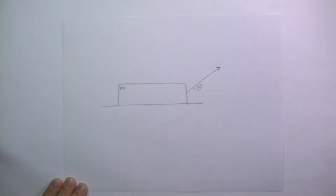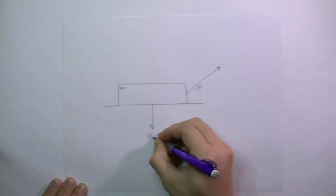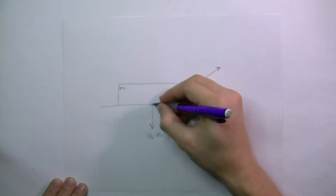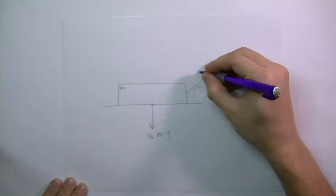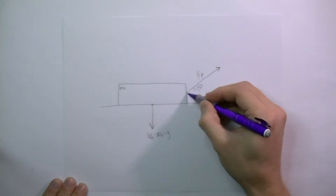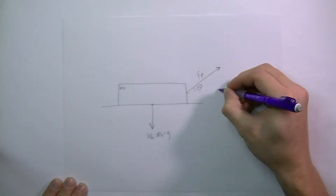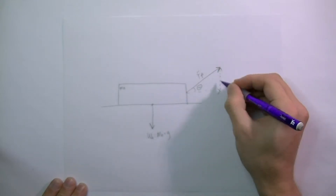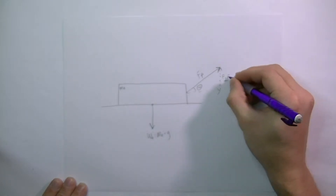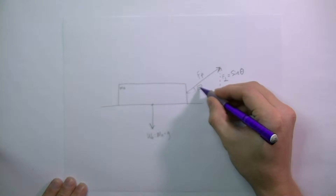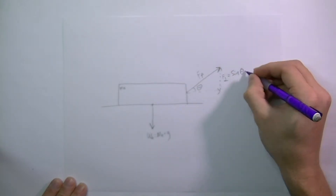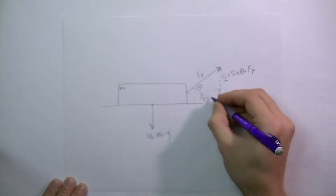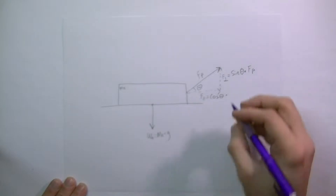The mass still has mass, which means that the block will still have weight. And the weight is equal to the mass of the block times gravity. We'll still call the applied force the force pull. We need to know the component of this force that is parallel to the ground, and the component that is perpendicular to the ground. The perpendicular force equals the sine of the angle times the force of the pull, since it's the opposite side. And the force parallel equals the cosine of the angle times the force of the pull.